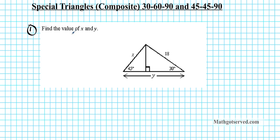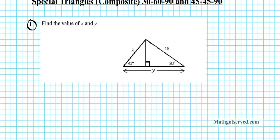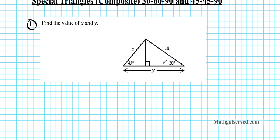The instructions are for us to find the values of x and y. To do this, we have to split this triangle into two separate triangles and treat them independently. In order to find y, we need to find the length of segment A and segment B combined, and we'll call the shared side C.